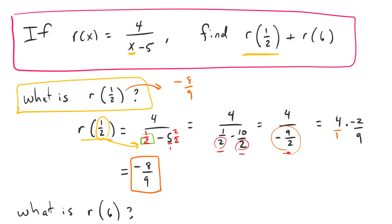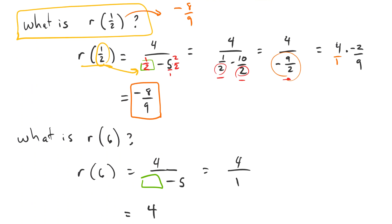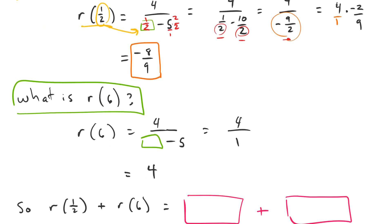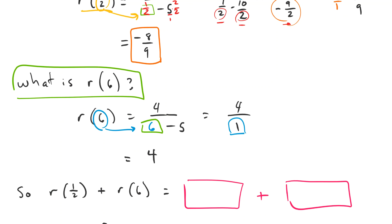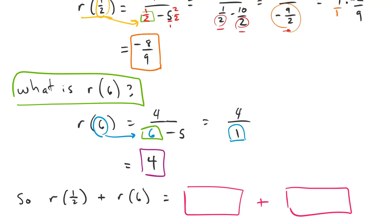So now we just have to figure out what is r of 6. Let's do that right here. We take 6 and plug in 6 everywhere there's an x. 6 minus 5 is 1, and 4 over 1 just gives us 4. So that one was a pretty slick one.